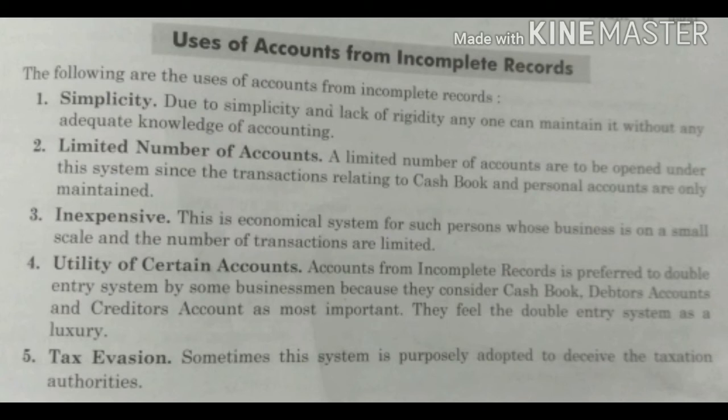Fourth merit is utility of certain accounts। अगर हम इसको double entry के साथ compare करें, तो कई कहते हैं कि इसमें हम तीन most important accounts को preference देते हैं: cash account, debtors account, and creditors account — जो एक company के लिए सबसे important होते हैं। Double entry के ज़ादा rules follow ना करके भी हम ये तीन accounts बनाकर important information extract कर सकते हैं।